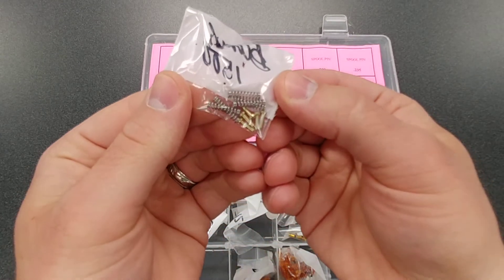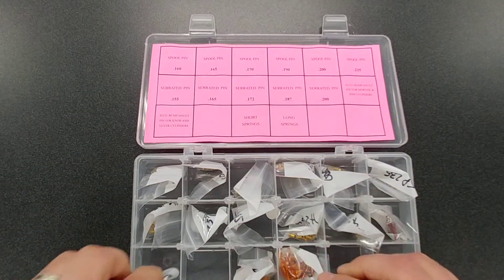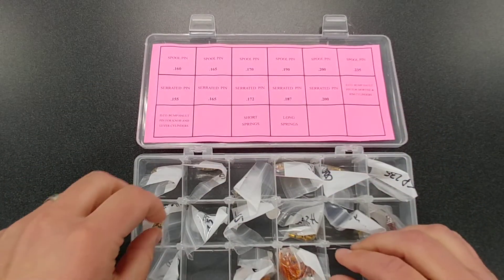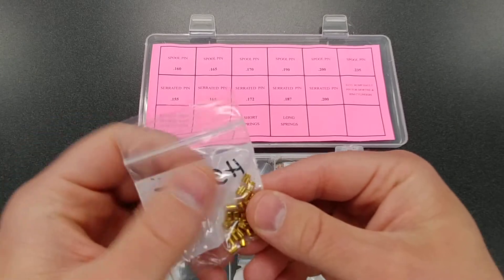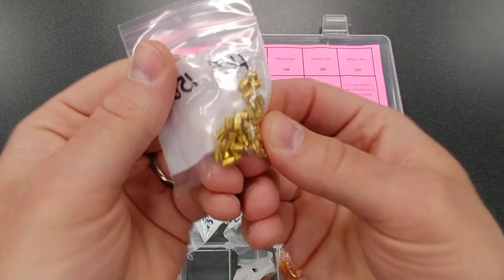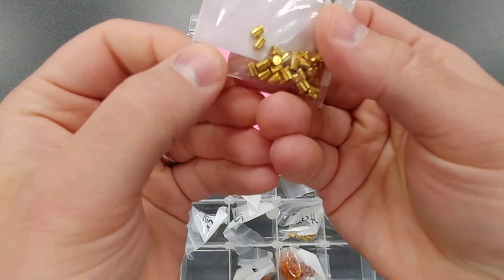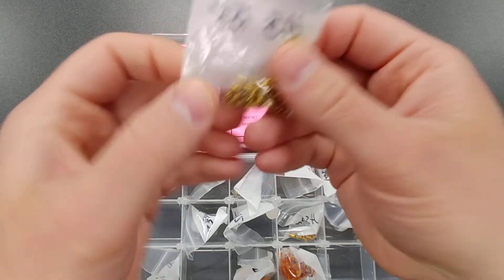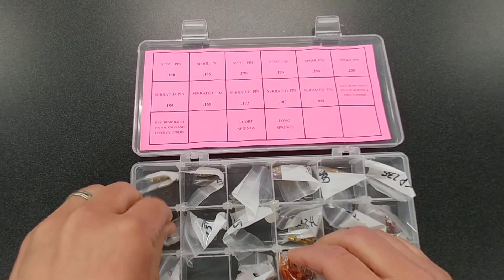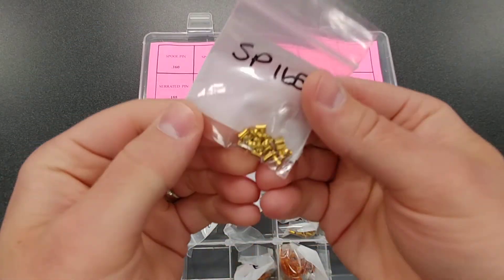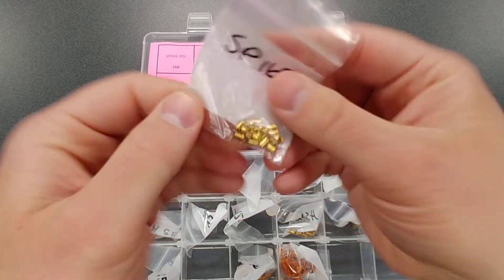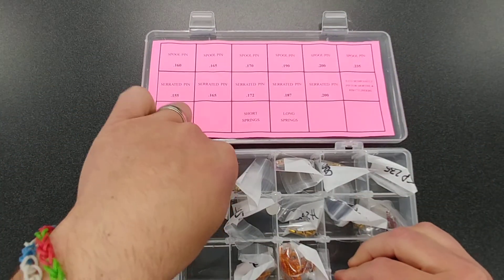And then as far as the spool and serrated pins, you're probably familiar with what those look like, but let me try to get a good picture here. There you can kind of see what those serrated pins look like and then the spools. So this is a great kit if you're looking for a variety of spool and serrated and then some Ilko bump halt pins as well.